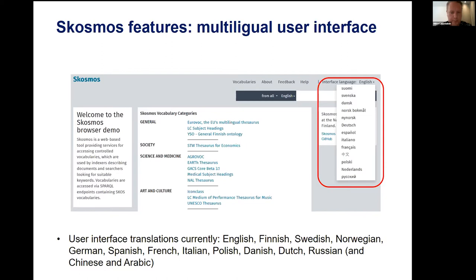There are also Chinese and Arabic translations, though I'm not sure how complete they are at this moment. As you can see from the screenshots, there is Chinese language available. Quite a few languages available already and we always welcome new translations. If you have a need for SKOSMOS in your own country and there's no interface translation available, please feel free to contribute. We are responsible for making SKOSMOS available in English, Finnish, and Swedish.